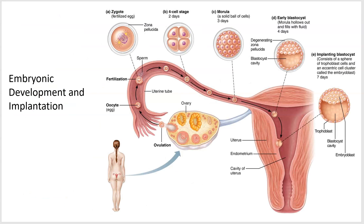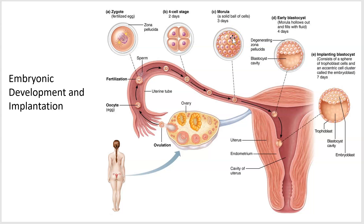So they have simple names: zygote, two-cell, four-cell, eight-cell, sixteen-cell — and once you get to sixteen you're called a morula. It stays being called a morula as long as it remains a solid ball.